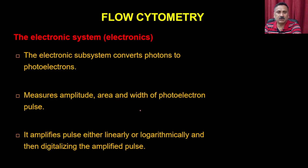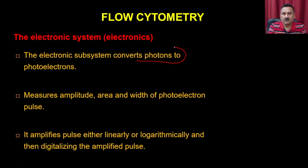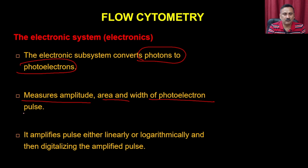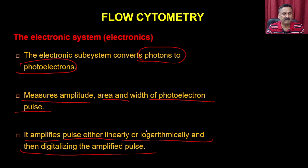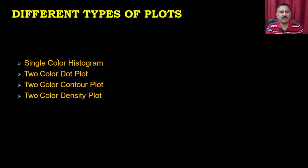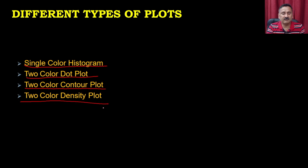The electronic system converts photons to photoelectrons, measures the amplitude, area, and width of the photoelectron pulse, and amplifies the pulse either linearly or logarithmically before digitizing it. Different types of plots can be generated from flow cytometry: single-color histograms, two-color dot plots, two-color contour plots, or density plots.